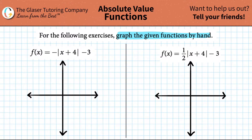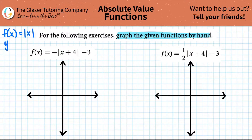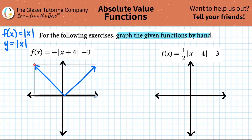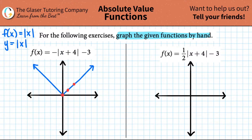The first thing you have to realize is what the standard graph looks like. The function here is the absolute value sign, so the standard graph is f(x) = |x|, which is the same as y = |x|. That gives us a V-shape right at the origin, with coordinates like (1,1), (2,2), (3,3), and on the other side (-1,1), (-2,2), (-3,3).